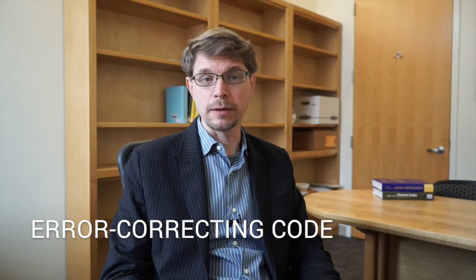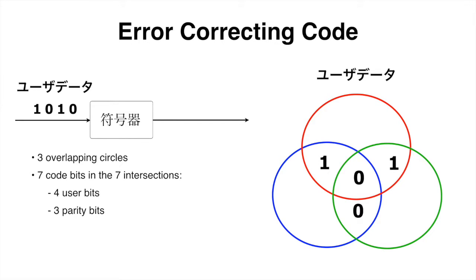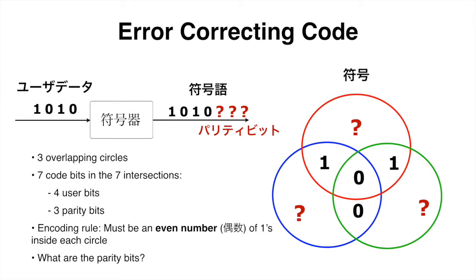Now I'd like to show you a very clever error correcting code scheme. It can correct one error and it's relatively easy to understand. The error correcting code is represented using red, blue, and green overlapping circles. The four bits of user data are written in the intersections, and the three parity bits are computed by the following rule: the number of ones inside of each circle must be even.